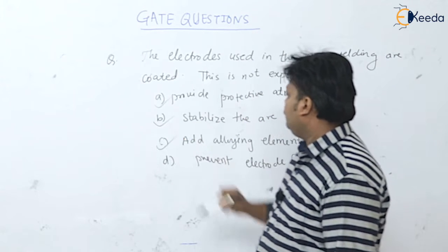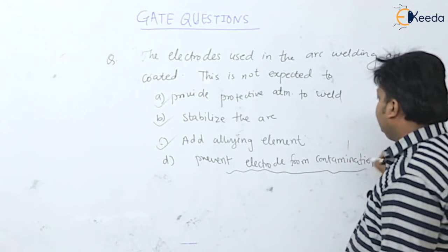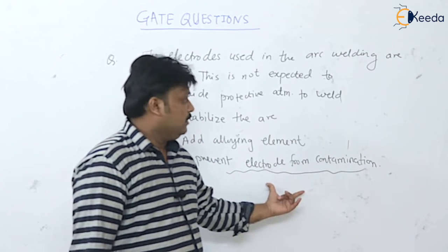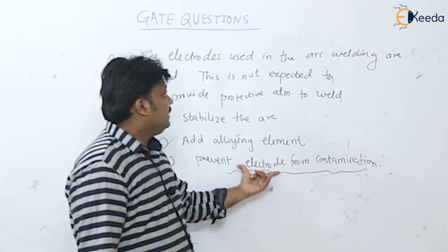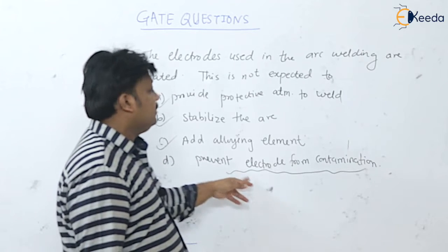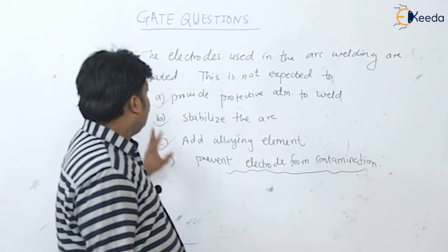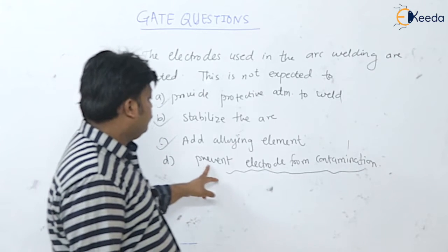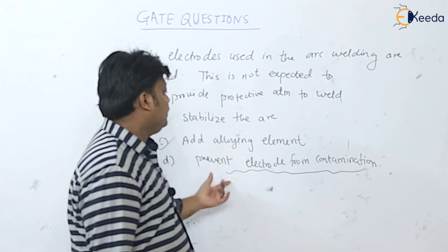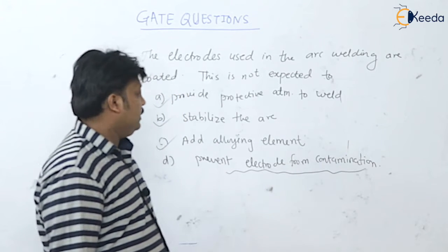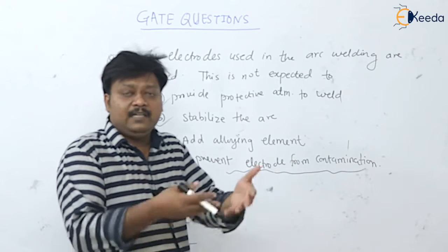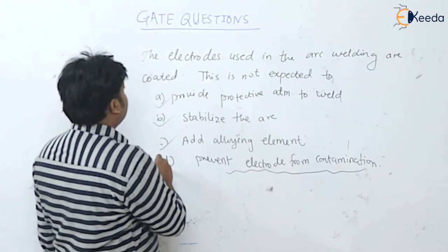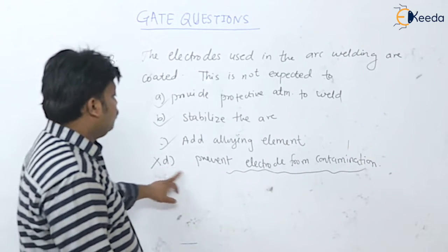The coatings provide protective atmosphere to the weld, stabilize the arc, and add alloying elements. Option D — prevent the electrode from contamination — is not an advantage of the coating on the electrode; that is a manufacturing issue of the electrode itself. The coatings are done for the benefit of the weld pool, not the electrode. So option D is the correct answer to 'not expected to'.